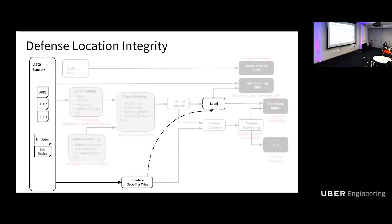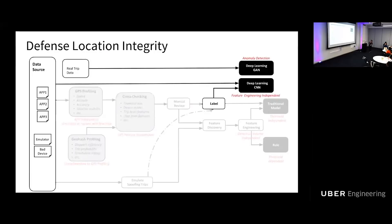On the other side, since we already know there are GPS spoofing apps available in app stores, we can emulate those spoofing apps to augment our label set. At the same time, we leverage deep learning technologies to do anomaly detection and reduce the effort in feature engineering.